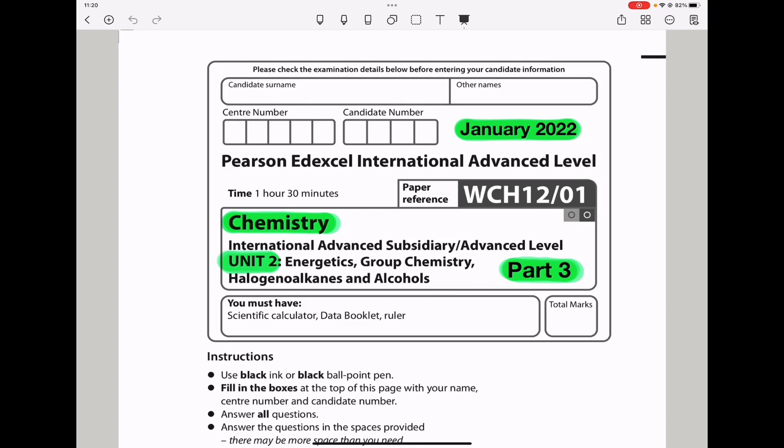Welcome to the Chemistry, Biology, and Math Revision Hub. Today we are doing the Pearson Edexcel International A-Level Chemistry Unit 2 for January 2022. This is the Part 3 video. I'll put the link to the Part 1 and Part 2 videos below in the discussion box. Let's begin with Question 23.